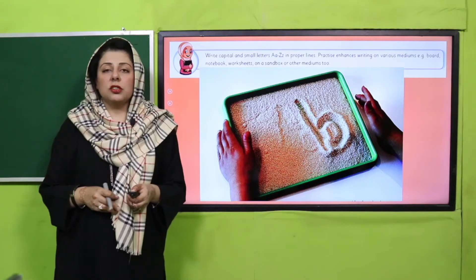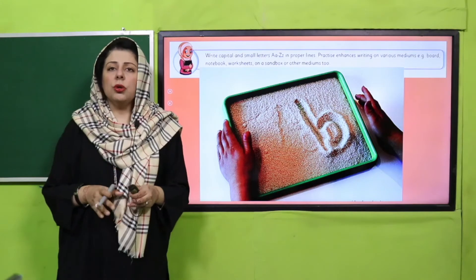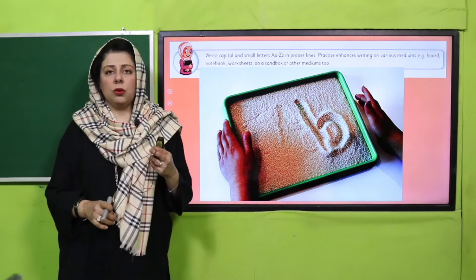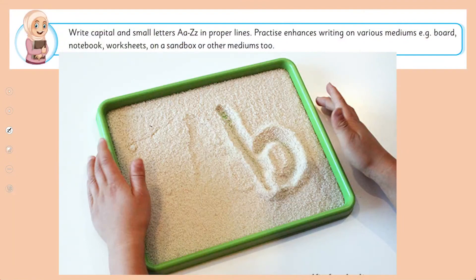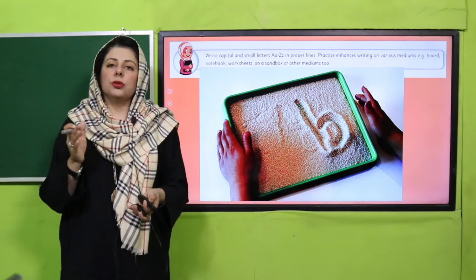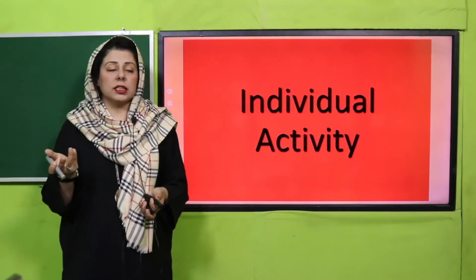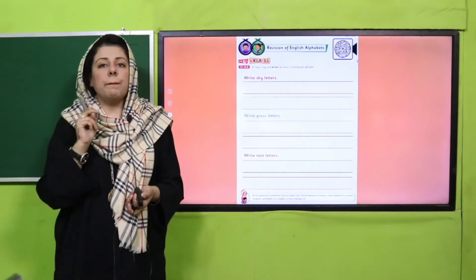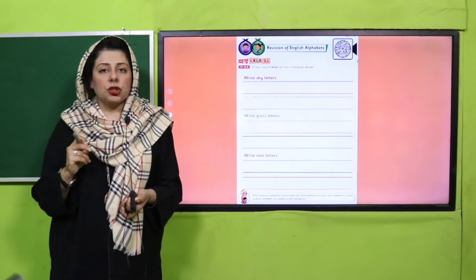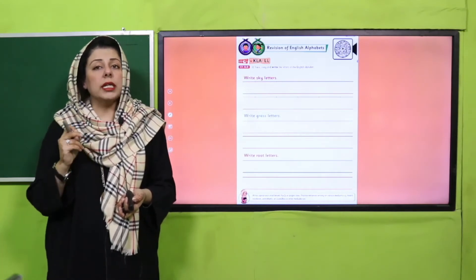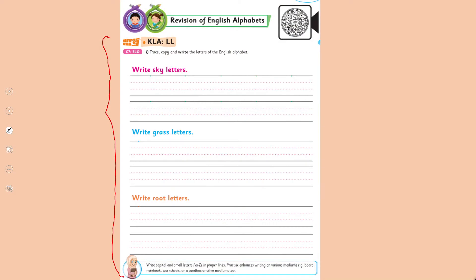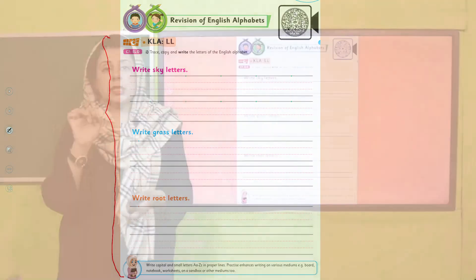This practice is very, very necessary. Teachers, please pause the video, divide students into groups, and give them something to trace the sky, grass, and root letters — I will be waiting here. After the sky, grass, and root letters practice, we go to our next task, which is an individual activity that you can do in your own book. Today we will be doing letters and writing practice — sky, grass, and root letters — tracing independently on four lines in your own book.